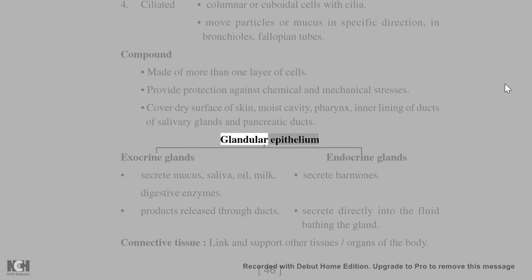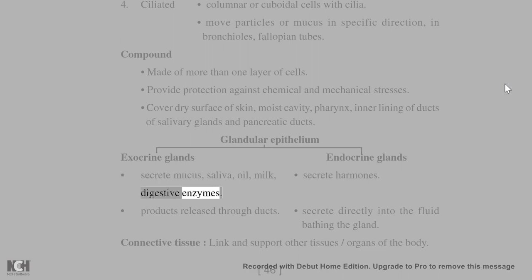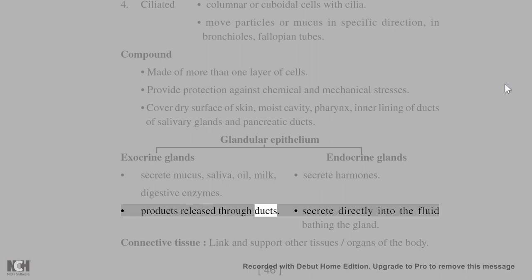Glandular epithelium includes exocrine glands and endocrine glands. Exocrine glands secrete mucus, saliva, oil, and milk; products are released through ducts. Endocrine glands secrete hormones and digestive enzymes directly into the fluid bathing the gland.